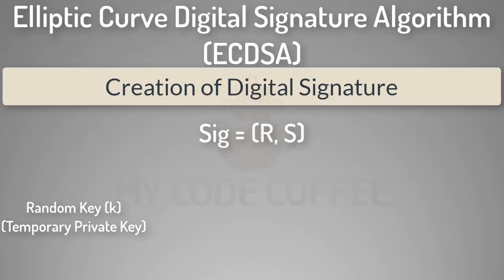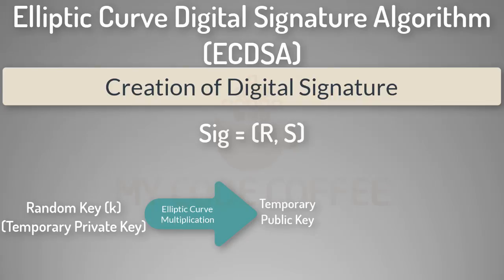The first step in the creation of a digital signature is to get a random key k. The value of k does not matter but its randomness is very important — if the same value of k is used to produce two signatures on different transactions, the signing private key can be calculated and funds can be stolen. This k is your temporary private key. The second step is to create a temporary public key from this temporary private key using elliptic multiplication. The r value of the digital signature is the x-coordinate of this temporary public key.